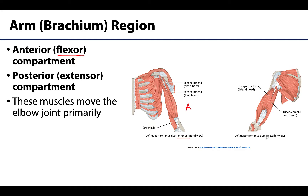The posterior compartment of the arm is located posteriorly, and the muscles located here will serve to extend primarily the elbow joint. I keep saying primarily, as these muscles' most powerful movements will often affect the elbow joint, but these muscles may also affect other surrounding joints. But right now we are talking big picture, big generalizations.